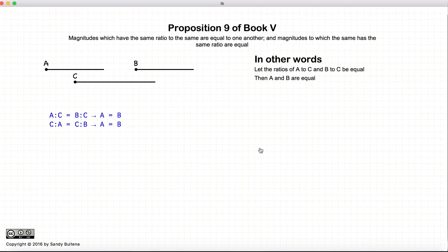So we're going to start with two ratios, a to c and b to c. And we're saying that if these two ratios, a to c and b to c are equal, then a is equal to b.